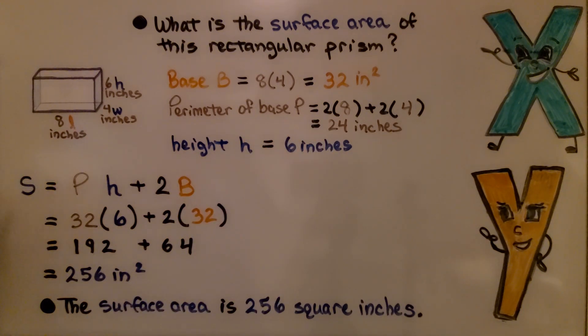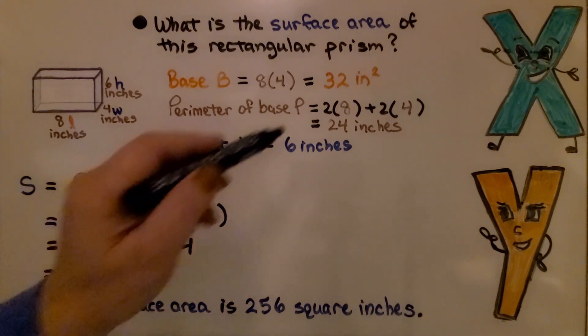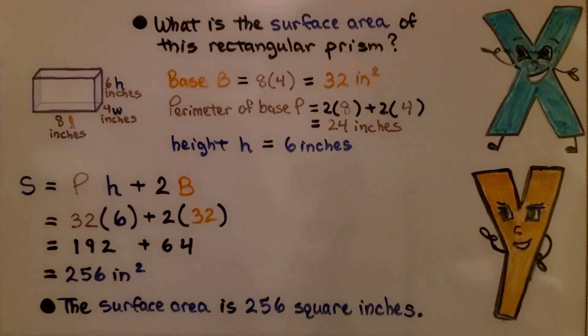We plug these into our formula. The surface area equals the perimeter of the base times the height plus 2 times the base area. We have 24 times 6, which is 144, plus 2 times 32, which is 64. We add them together and get 208 inches squared. The surface area is 208 square inches.